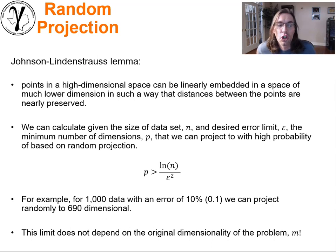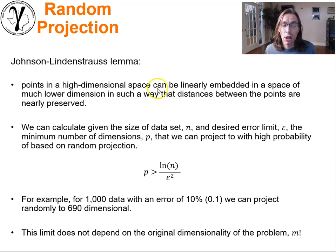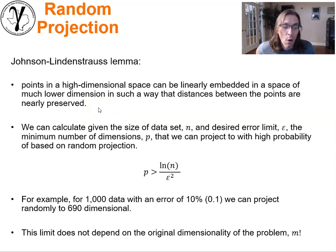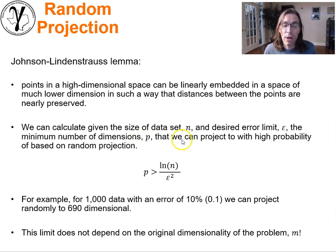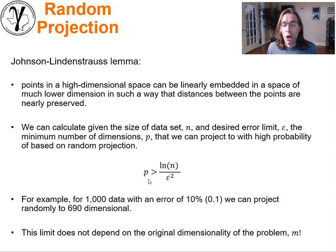We can carry on with this lemma from Johnson and Lindenstrauss that shows us that points in a high-dimensional space can be linearly embedded in a space of much, much lower dimension in such a way that distances between the points are nearly preserved. We can calculate, for a given data size n and a desired level of error, the minimum number of dimensions P that we can project to with high probability based on a random projection. We can look at this formula: the natural log of the number of samples divided by the error term squared.